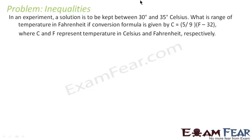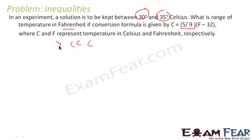In this experiment, the solution is supposed to be kept between 30 to 35 degrees Celsius. They are asking us the range of temperature in Fahrenheit, where the formula is given. So 30 is less than C and C is less than 35. We'll replace C by the formula: 5/9 into (F minus 32).